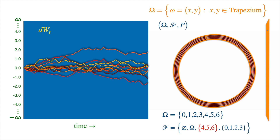And if you look at each path as a function of time, it's like a continuous function. So technically we can view the Brownian sample space as the set of continuous functions of time. Here we assume the domain of the function is from zero to some finite horizon. And because the Brownian process starts at zero by definition, we are only interested in those functions that vanish at zero. Now we have the sample space, but we have a new challenge.